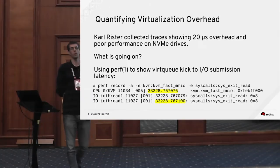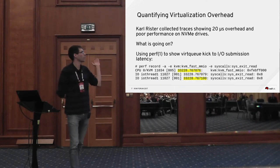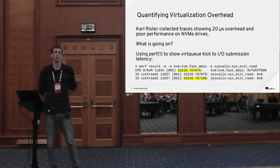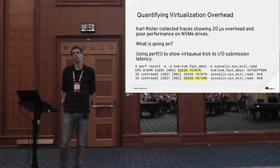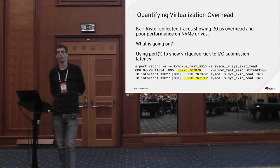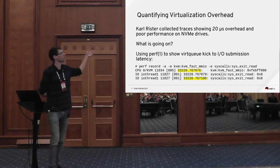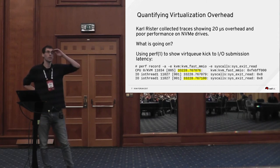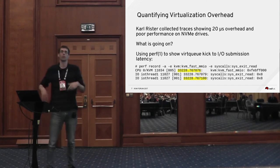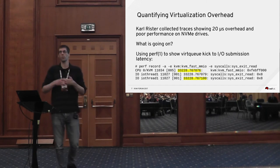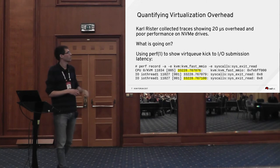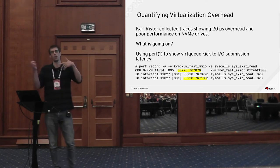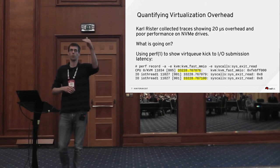Originally in the Red Hat performance team, Carl Rister, about a year ago, was running storage benchmarks on Intel NVMe drives and found the overhead was very high. To find the overhead he used tracing — tracing events throughout the life cycle of an IO request, from when the guest submits the IO request. Each trace event has a timestamp, so you can figure out how long it took to get from point A to point B.